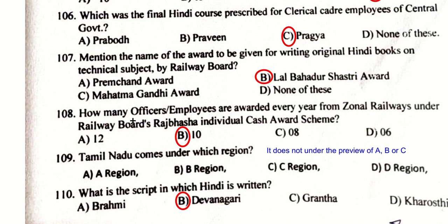The award given for writing original Hindi books on technical subjects by the Railway Board is the Lal Bahadur Shastri Award. Under the Railway Board Rajbhasha Individual Cash Award Scheme, 10 officers or employees are awarded every year from general railways. Tamil Nadu does not follow Rajbhasha rules so it does not come under the purview of the ABC categories.